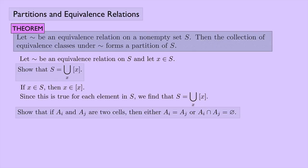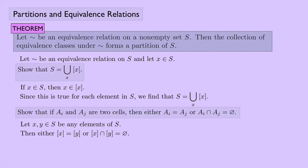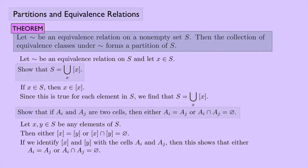What about the second part? Let A sub I and A sub J be any two cells, and we want to show that either they're the same or they're disjoint. Let X and Y be any elements of S. Then it must be true that either the equivalence class of X equals the equivalence class of Y, or they're disjoint — something we showed earlier. If the equivalence class of X is A sub I and the equivalence class of Y is A sub J, then it's really saying the same thing we want to show. So we've shown the two properties needed for a partition.